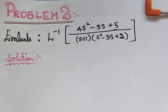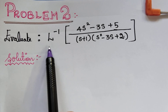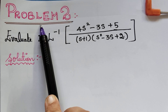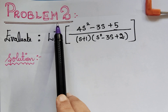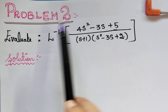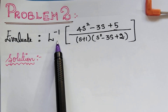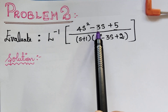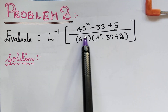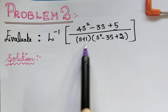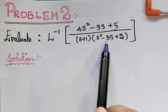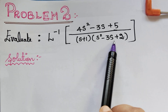Dear students, under the topic evaluation of inverse Laplace transform using partial fractions, here we have the second problem. Already we have completed problem 1 in our previous video lecture. Now here the question is: evaluate the inverse Laplace transform of (4s² - 3s + 5) divided by (s + 1) multiplied with (s² - 3s + 2).